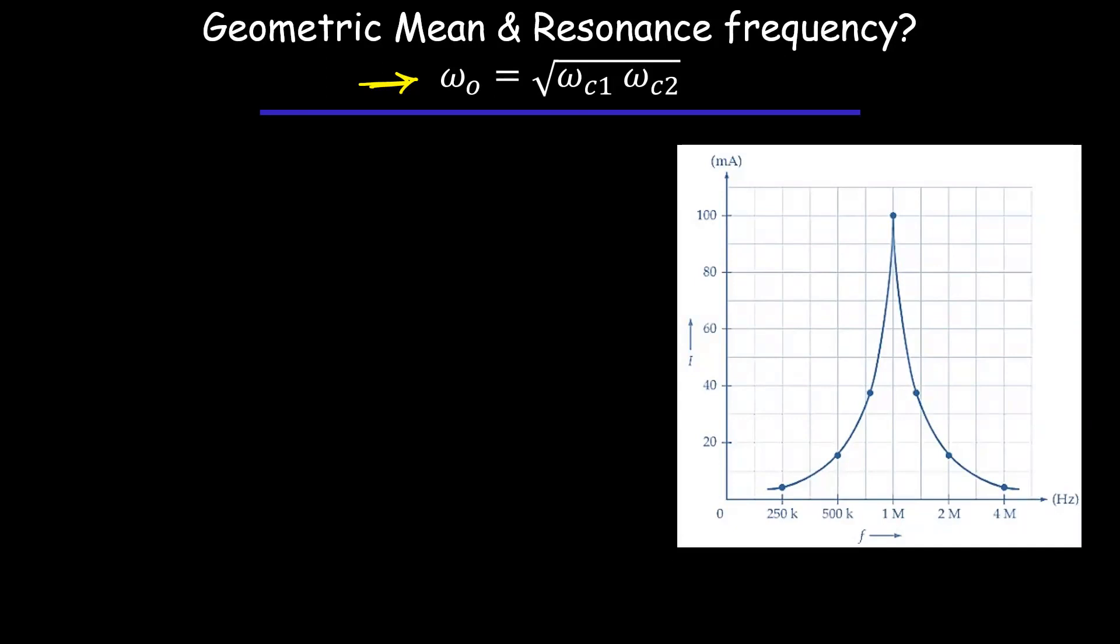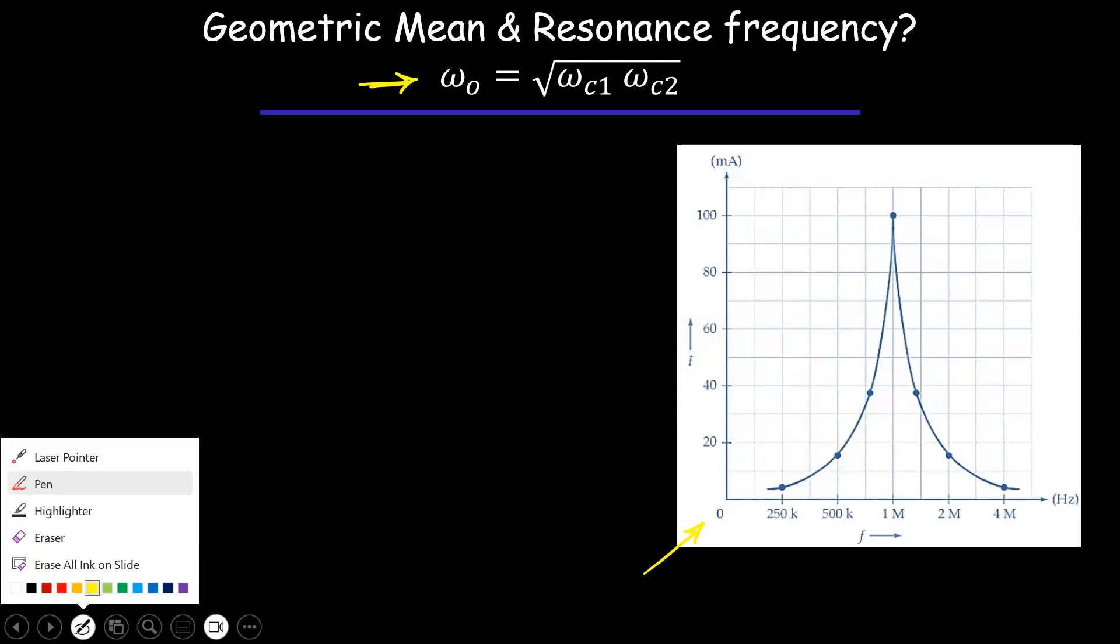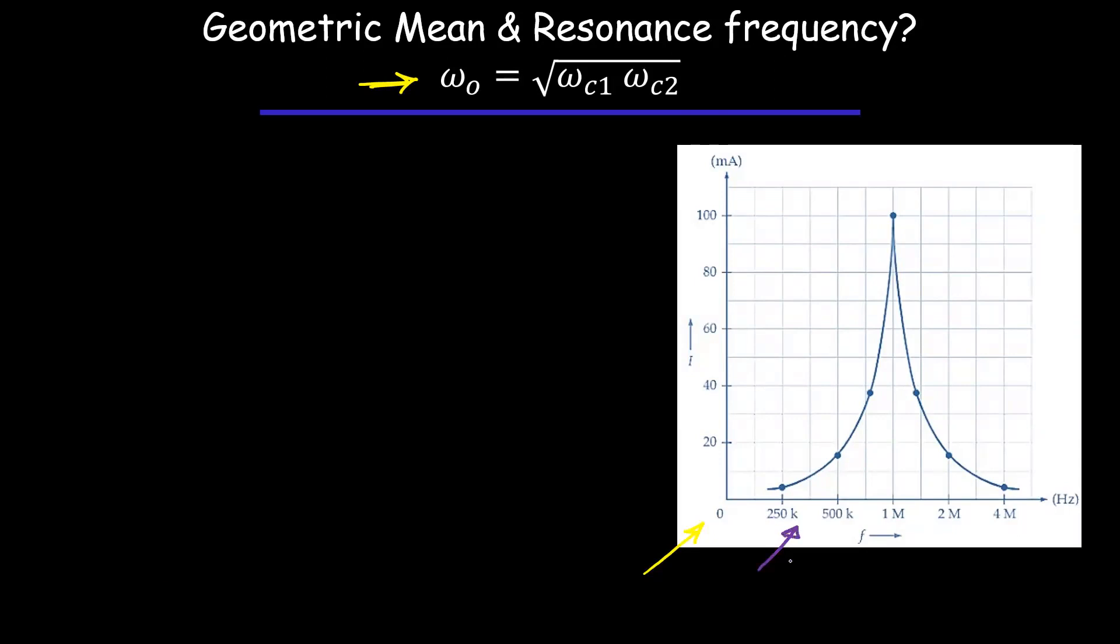And the answer will be very clear when we look at an example like the example here in which we draw the transfer function of, for example, a current versus frequency. So we have here two scales. We have logarithmic scale in the x-axis and we have linear scale in the y-axis. And to deal with each one, we should deal differently.